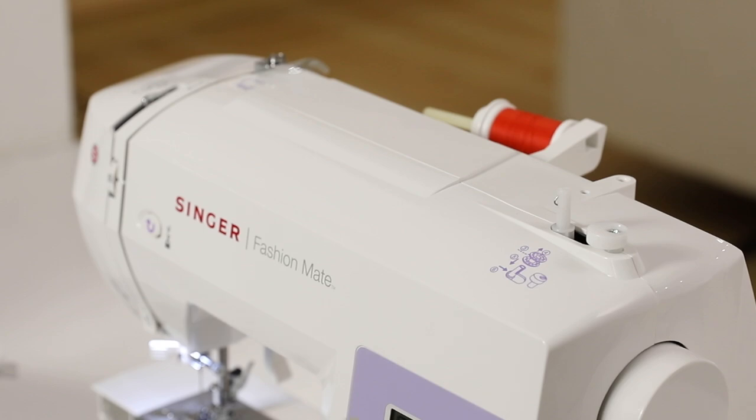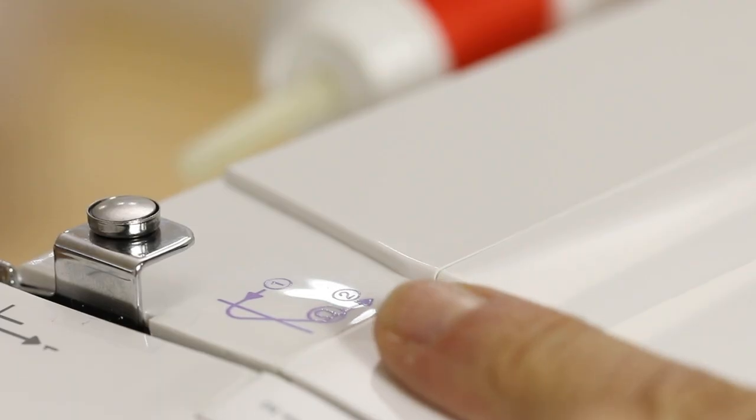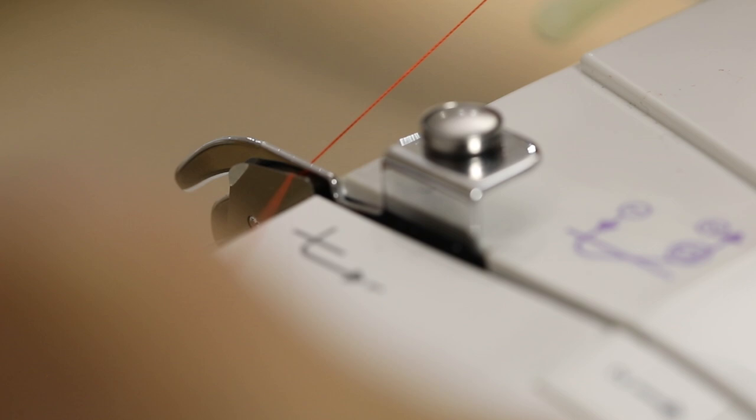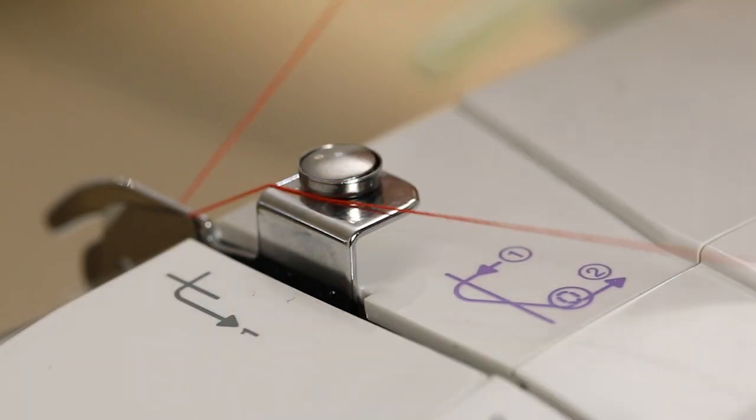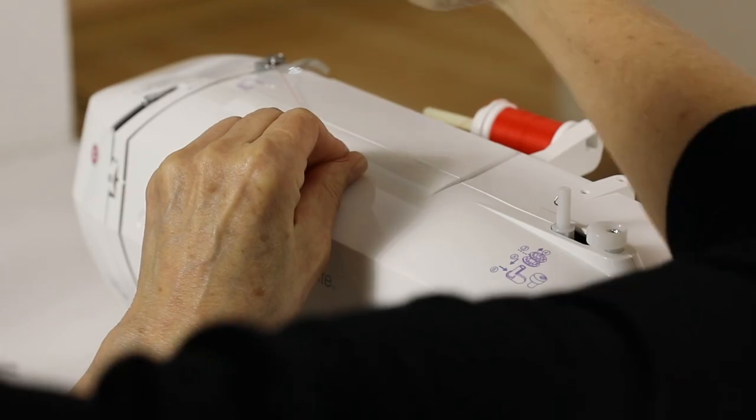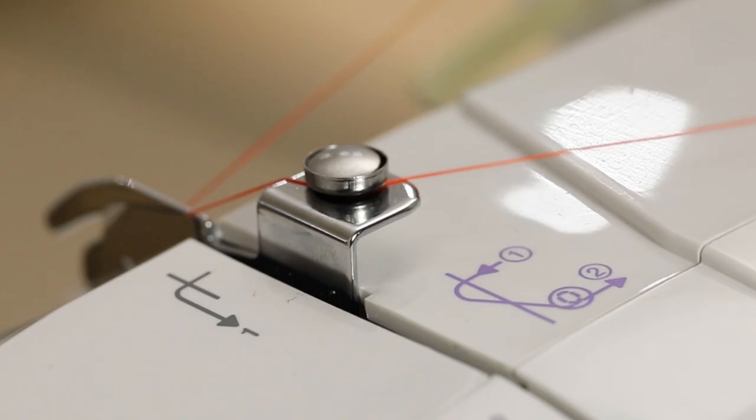For help on how to wind the bobbin properly you can refer to these purple guides at the top of your machine. Step one tells me to bring the bobbin thread into this first metal guide. Number two tells me to bring the thread around my bobbin winding tension disc, wrap it around kind of like a little letter E and make sure that the thread is snugly in the bobbin winding tension disc or the bobbin won't wind properly.